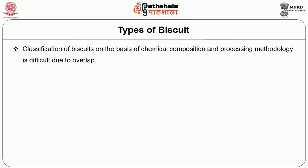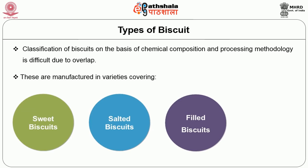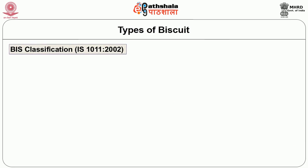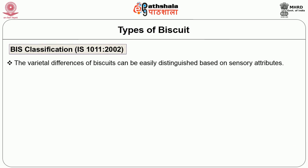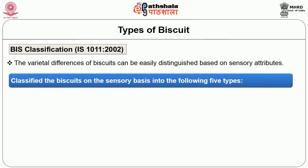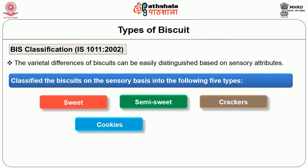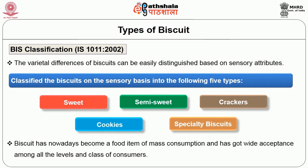Classification of biscuits on the basis of chemical composition and processing methodology is difficult due to overlap. There are mainly three types of classification. The first is the BIS classification. Varietal differences of biscuits can be easily distinguished based on their sensory attributes; hence BIS classifies biscuits on a sensory basis into sweet, semi-sweet, crackers, cookies, and specialty biscuits. Biscuits have become a food item of mass consumption with wide acceptance among all levels and classes of consumers.